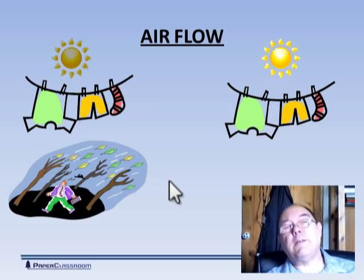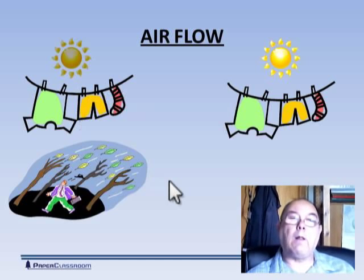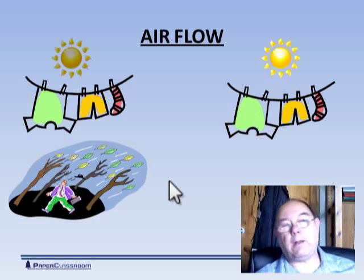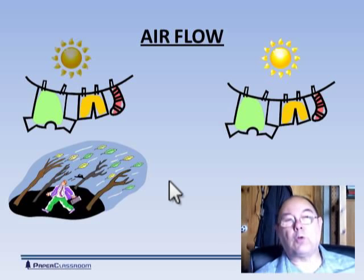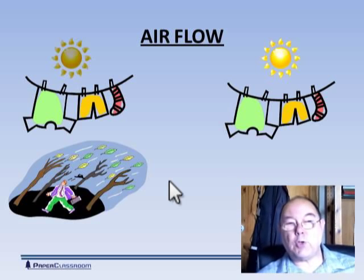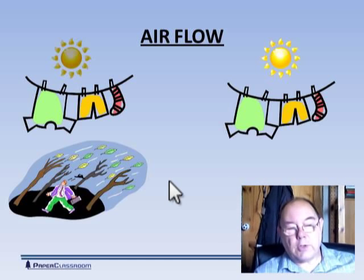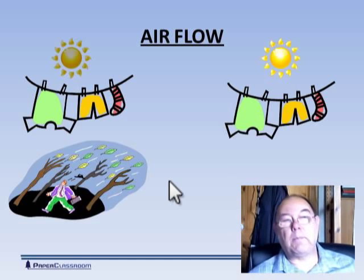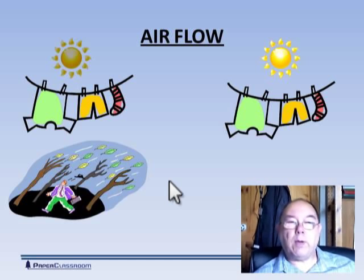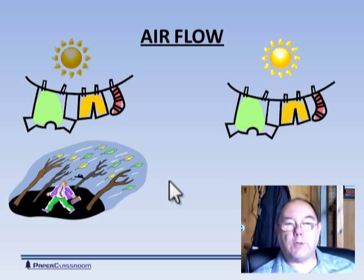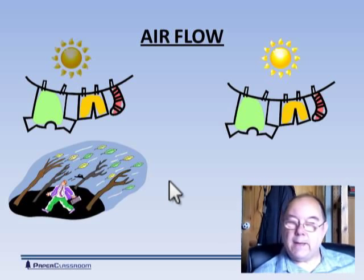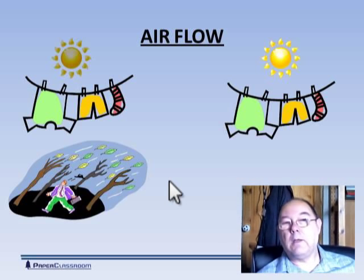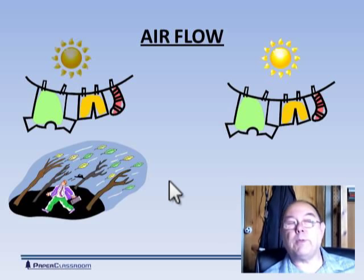Paper makers eventually realised this and started to enclose the machines. If you look at a modern paper machine now, it's completely enclosed. We have total control of moisture coming into the drying section area and air and moisture coming out. What we tend to do is bring in hot, dry air to push out hot, moist air. The hot, moist air passes through a heat exchanger, and that's how we heat up the incoming air.